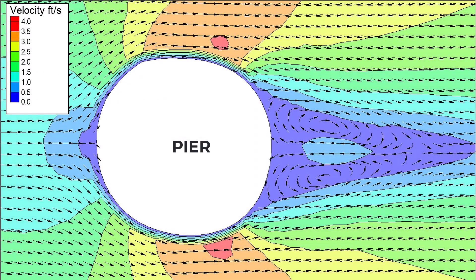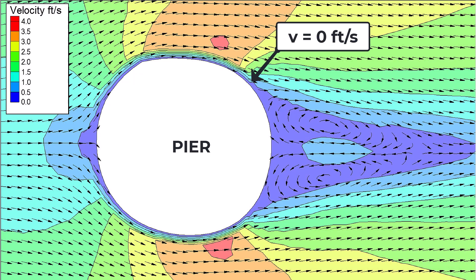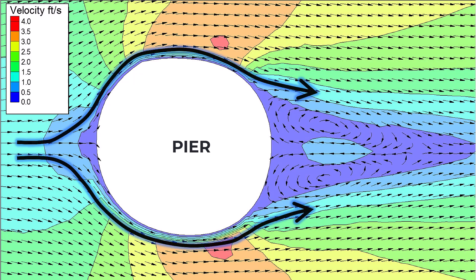When the SRH 2D cell-centered solution is interpolated to the mesh nodes, a zero velocity at the element edges along the pier is assumed. Using a hole to represent a pier will force water to flow around the pier and will also allow for resulting head loss caused by the pier.